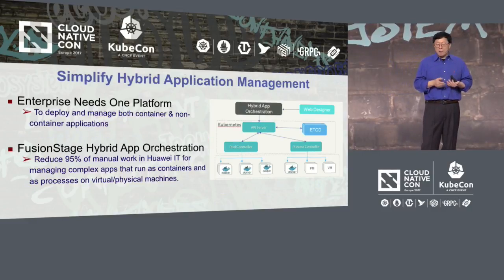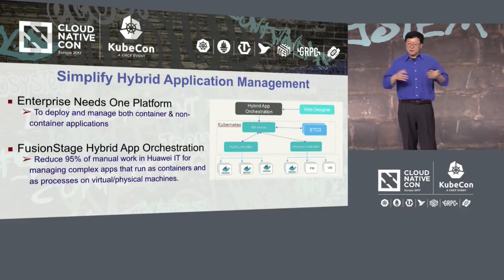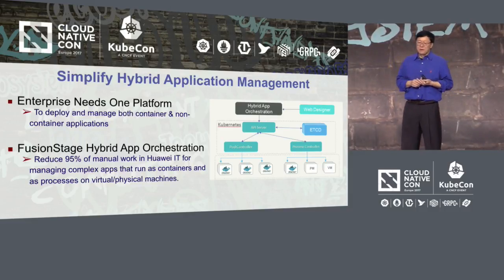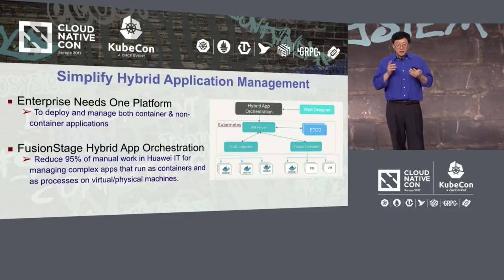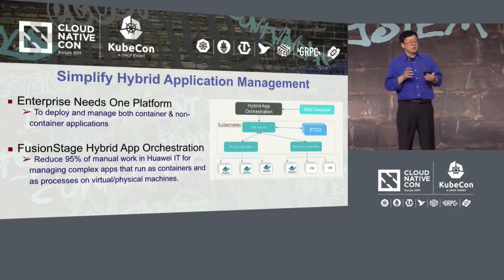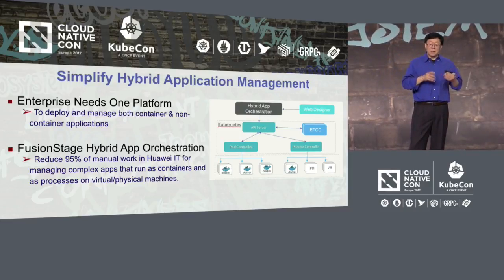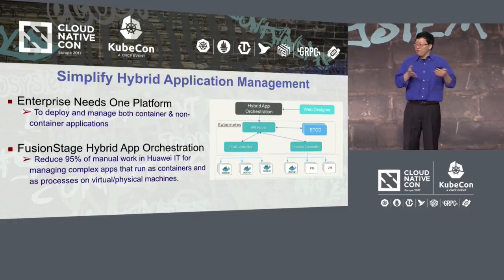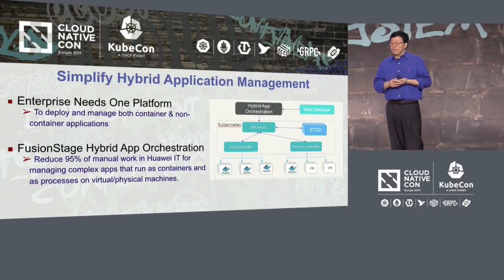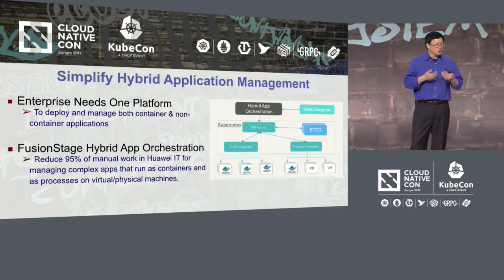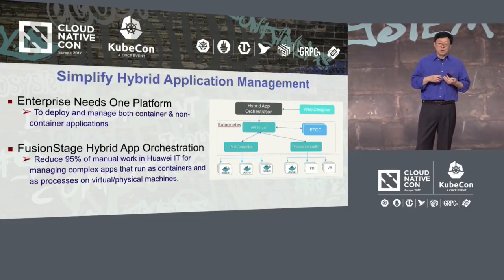I really like a feature we call hybrid application orchestration. We slightly extended the Kubernetes architecture by introducing a process controller shown in the diagrams. Now I have one platform that can manage both container-based and non-container-based applications within the same cluster. We found this is really useful for customers with existing applications, helping them move from legacy applications to cloud native architecture. This feature also helped our own IT reduce 95% of the manual work needed to manage non-container applications.